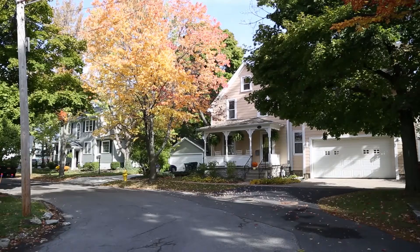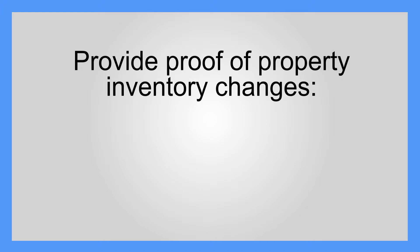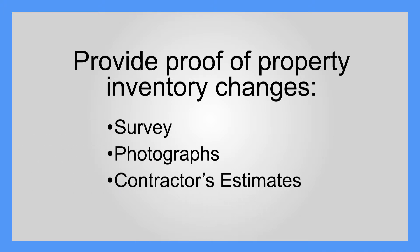Review the property inventory data to ensure its accuracy. If any information is deemed inaccurate, you can include those changes to your inventory on your application. Next, search comparable sales. Select appropriate sales that support the value you believe your property is worth. If you are challenging your new assessment due to property inventory items, you do not need to search for comparable sales. Simply provide proof of a property inventory change such as a survey, photographs, contractors' estimates of repairs, etc.